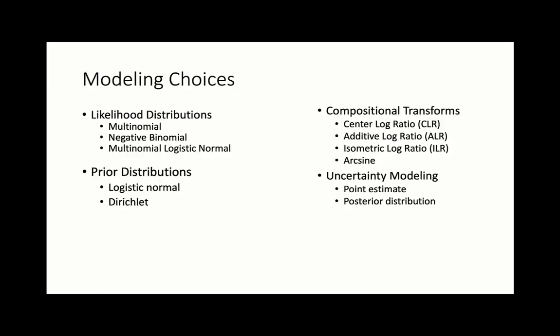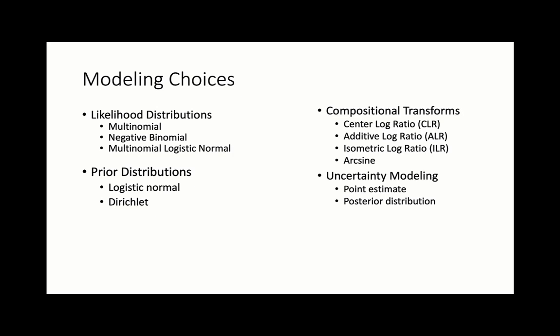As you can imagine, there are quite a few model choices within this generalized linear model framework. For instance, the multinomial distribution is among the simplest counting distributions, used in Songbird and ALDEX2. But there are more complex distributions such as the negative binomial distribution used in DEC2 and EDGE-R that can better account for technical variability. There are also different choices of prior distributions: the logistic normal distribution is used in Songbird, while ALDEX2 uses the Dirichlet distribution.